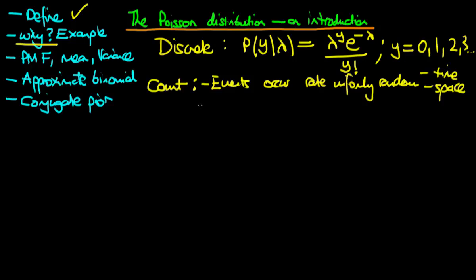Also, the events must be independent. What this means is that the probability of another event occurring, given that a first event has occurred, is no different to the unconditional probability of the second event occurring.